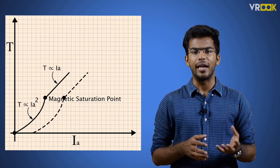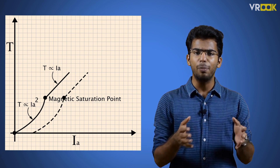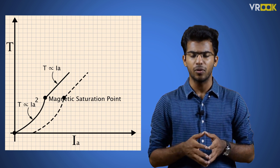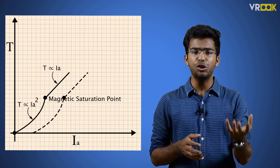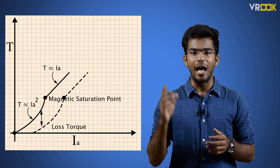We can also see the graph of shaft torque versus armature current, where the values will be lesser than the armature torque. The difference between armature torque and shaft torque is the lost torque, as seen in the graph. We can conclude that if we require large starting torque to lift or move heavy masses, as in the case of elevators, locomotives, hoists, etc., series motors are ideal.